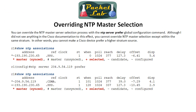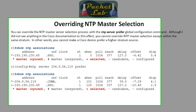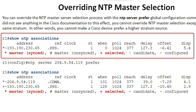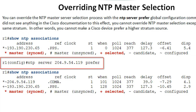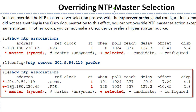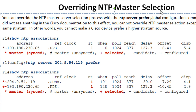You can override the NTP master selection process using the command `ntp server [ip-address]` followed by the keyword `prefer` — that's a global configuration command. Here we only have one NTP association to the 193 address. I configure a second NTP server at the 204 address with prefer, and when we do `show ntp associations` we can see it has switched from 193 to 204.